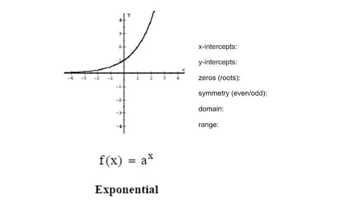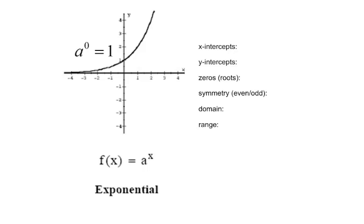Look at the overall graph of this parent exponential function. It has no x-intercepts — it travels from negative infinity just above the x-axis but never touches or crosses it. f of x equals a to the x, no matter what a is, will have no x-intercepts. The parent exponential function, untranslated, has only one y-intercept: the point (0, 1). All exponential functions pass through that point if no translation has been applied. So there are no roots, no zeros.